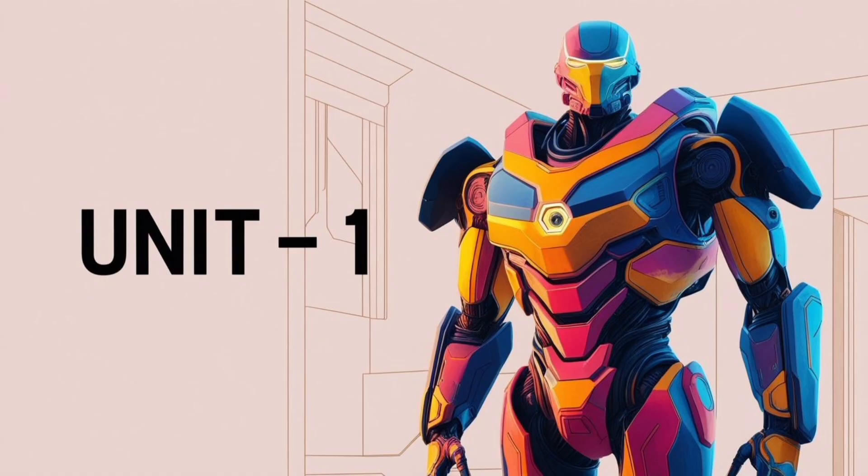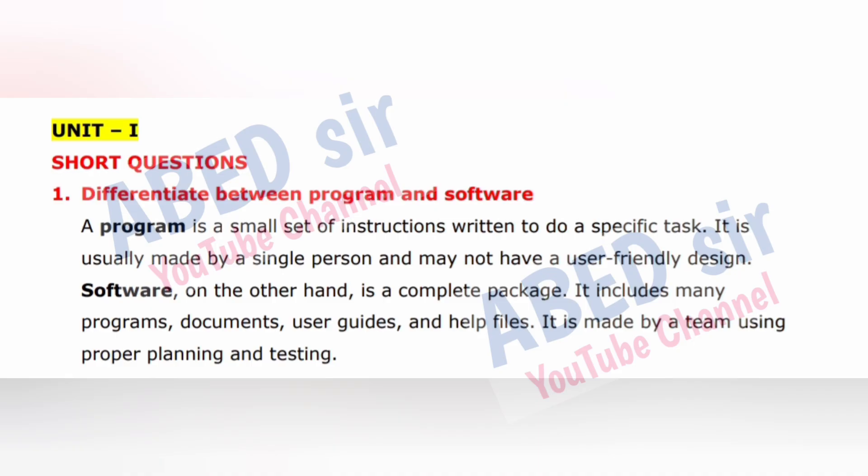Unit 1. The important short question is: Differentiate between program and software. A program is a small set of instructions written to do a specific task. It is usually made by a single person and may not have a user-friendly design. Software, on the other hand, is a complete package. It includes many programs, documents, user guides and help files. It is made by a team using proper planning and testing.